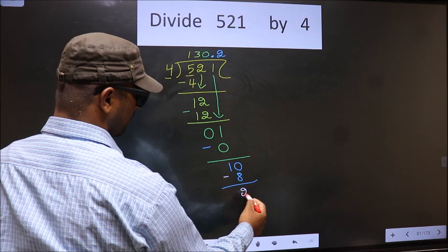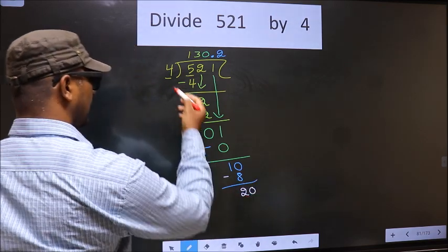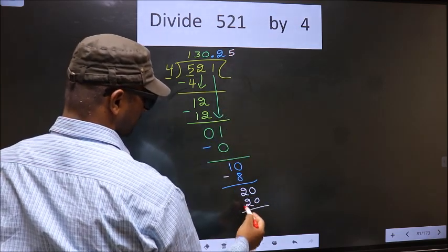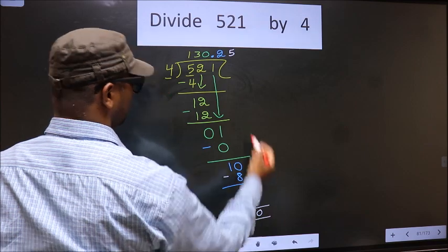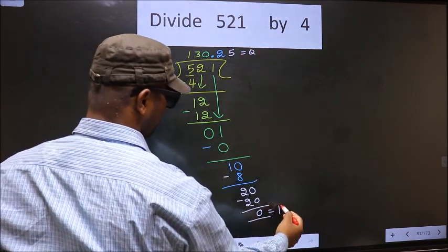Now we have 10. 4 times 2 is 8, so 10 minus 8 equals 2. We already have a decimal. Bring down another 0. When do we get 20 in the 4 table? 4 times 5 is 20. So 20 minus 20 equals 0. This is our quotient and this is our remainder.